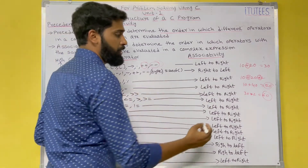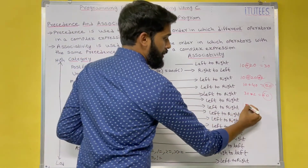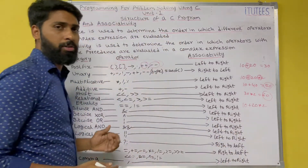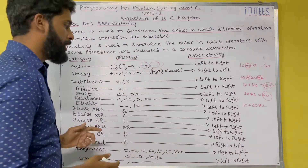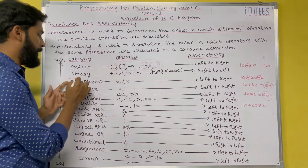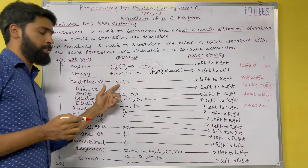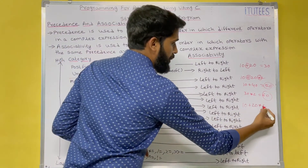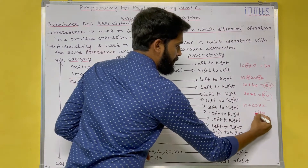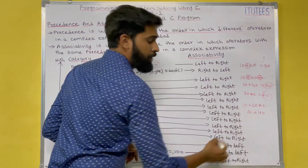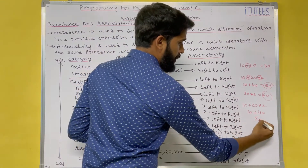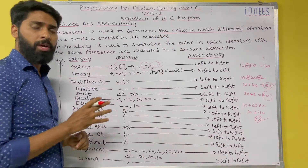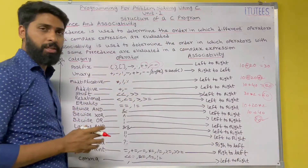Now you can answer 10 plus 20 into 2. The highest precedence goes to multiplication, so first you perform 20 into 2, which is 40, then 10 plus 40 equals 50. So 50 is the answer. I hope you all understand what precedence is — it is used to determine the order in which different operators in a complex expression are evaluated.